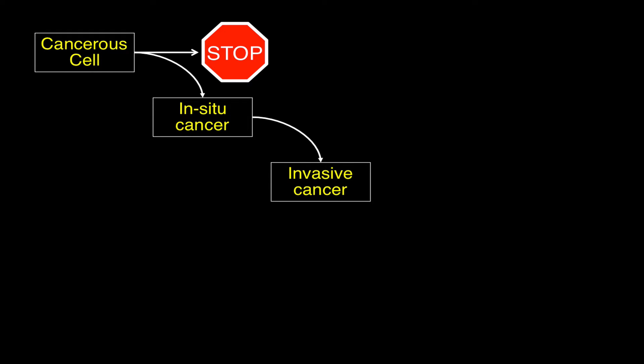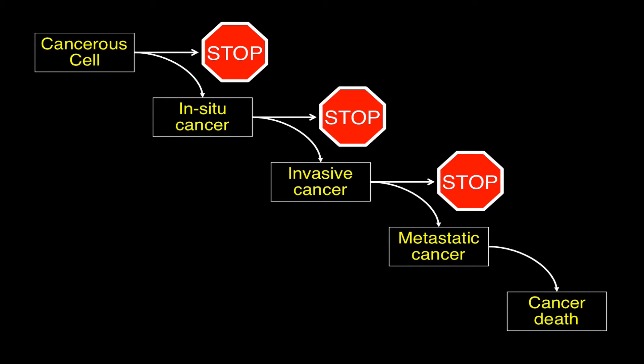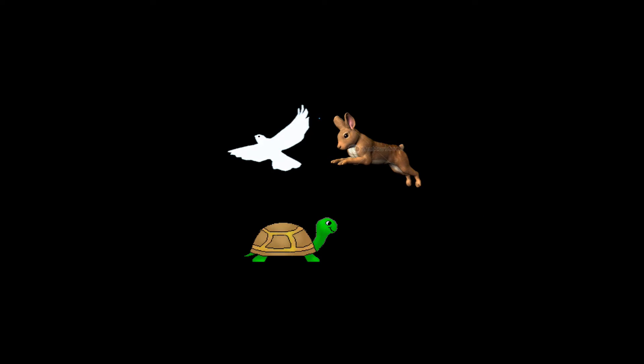We now realize the world's a more complicated place. A cancerous cell can progress to in situ cancer, or it can stop. In situ cancer can progress to invasive cancer, or it can stop. Invasive cancer may progress to metastatic cancer, or it may stop. And metastatic cancer may lead to cancer death, or it may not. That leads us to a new conception of cancer — three types: the birds, the rabbits, and the turtles.